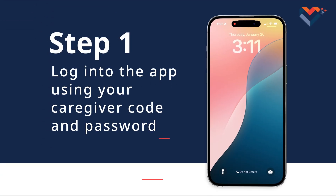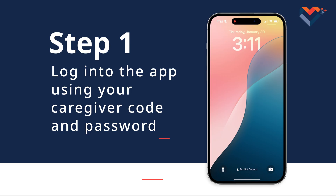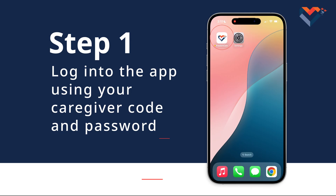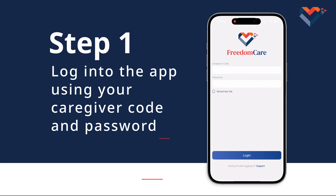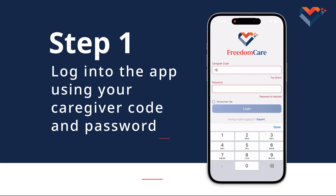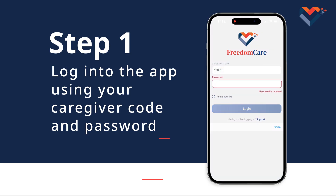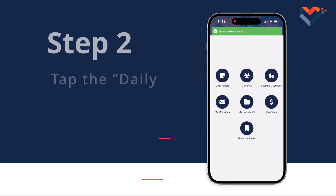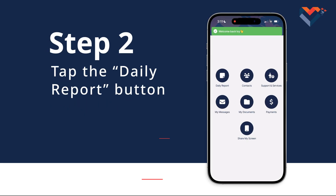Step 1: Log into the app using your caregiver code and password. Step 2: On the main screen, you'll see the daily report button. Go ahead and tap on it.